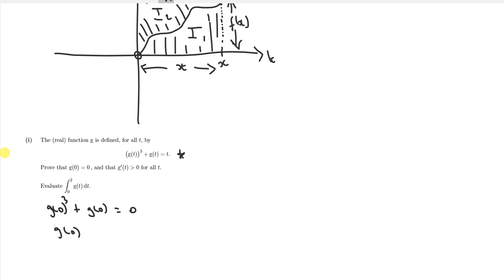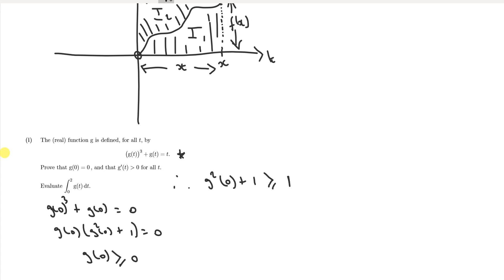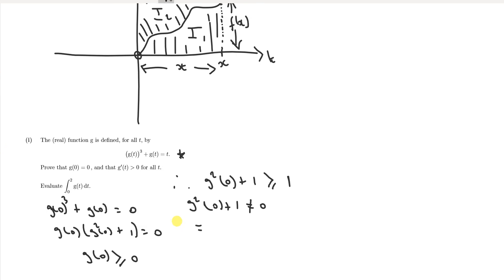Now, g(0) squared must be greater than or equal to 0, so therefore g(0) squared plus 1 must be greater than or equal to 1. So basically we know that g(0) squared plus 1 cannot equal 0. But the right-hand side is equal to 0, so the only other possibility is for g(0) to be equal to 0. That's the first bit we've managed to prove.